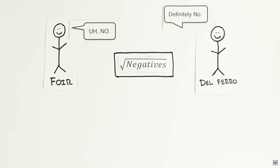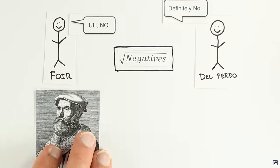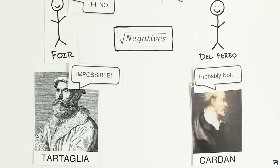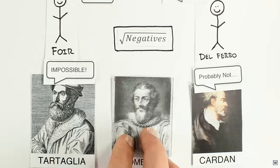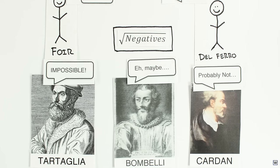In the past, mathematicians would have thrown in the towel here and declared the problem impossible. But Bombelli was able to press on simply by allowing the square roots of negatives to exist.